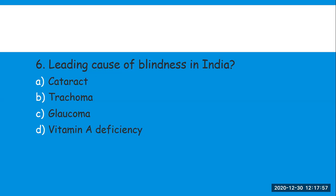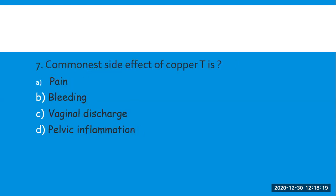Next question: what is the leading cause of blindness in India? All options are causes of blindness in India, but which is the leading cause? A) cataract, B) trachoma, C) glaucoma, D) vitamin A deficiency. The right answer is cataract — in India, cataract is the leading cause of blindness.